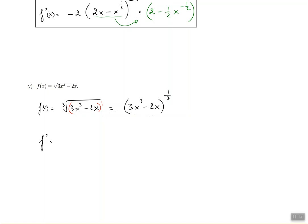At this point, the derivative is going to be the same as before. Bring the 1/3 down to the front. Put the 3x cubed minus 2x afterwards. Take 1 away from the 1/3 and it becomes negative 2/3.